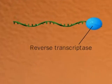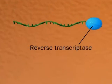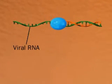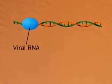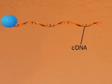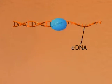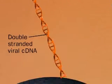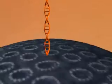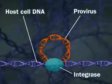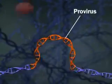Using reverse transcriptase brought in by the virus, the viral RNA makes a complementary cDNA. The viral RNA degrades, and the cDNA is the template for a second DNA strand. The double-stranded DNA enters the host cell's nucleus and integrates into a chromosome as a provirus.